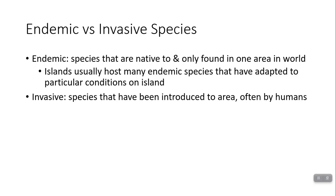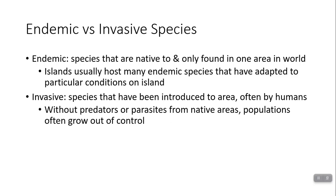On the other hand, humans tend to bring species into an area — sometimes on purpose, like taking cats, dogs, or horses when we move somewhere — and a lot of times it ends up being accidental. There are plenty of invasive species that humans have introduced on purpose, sometimes just because something looks pretty, and other times trying to accomplish something. That becomes a problem because without the natural population controls usually found in an ecosystem — like predators and parasites — those invasive species populations often grow out of control dramatically.